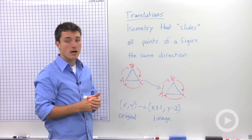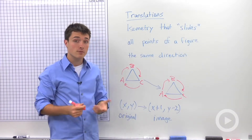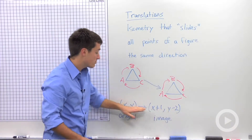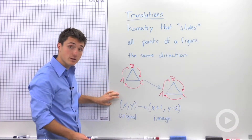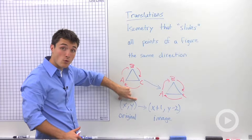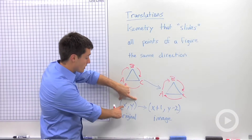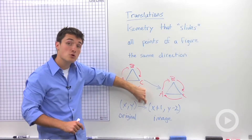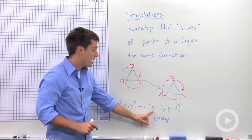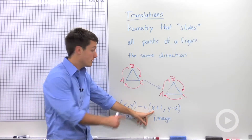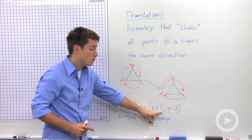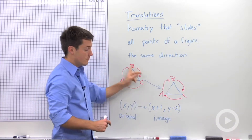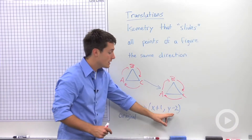But how do we describe a translation to other mathematicians? We're going to write an expression that says the original coordinates, whatever they are, X and Y, are being mapped onto a new image. So this tells me to take every X coordinate of this triangle and add 1 to it. It tells me to take every Y coordinate of this triangle and subtract 2.